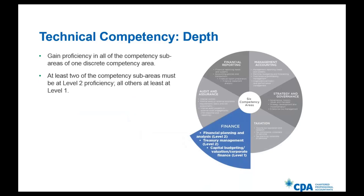The other area you will need to gain is an area of depth. To gain proficiency in depth, you will need to gain proficiency in all of the sub-competency areas of one discrete main competency area. For example, this student has achieved a depth in finance because they have achieved all of the competency areas with at least two of them at a level two. In this case, the student has achieved a level two in financial planning and analysis and treasury management, and a level one in capital budgeting, valuation, and corporate finance, meaning the student has successfully achieved a depth area in finance.